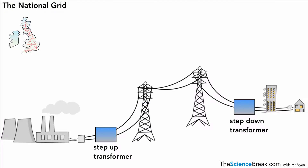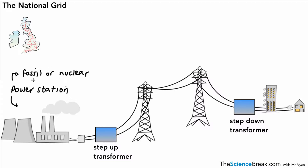Here we have a model of the National Grid, and these are the main parts of the National Grid that we need to know about. The first thing on the left-hand side is our power station. The power station is going to supply the electricity, and it often does this by burning fossil fuels or by using nuclear fuel. These are two major ways in which we generate our electricity. Once the electricity is generated, it's passed through what we call a step-up transformer, which then links to what we call transmission cables.